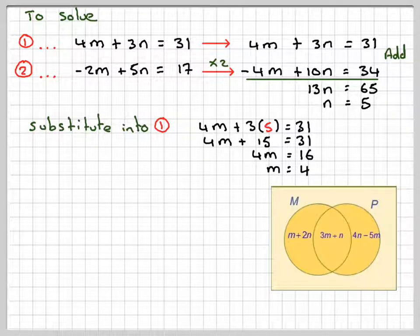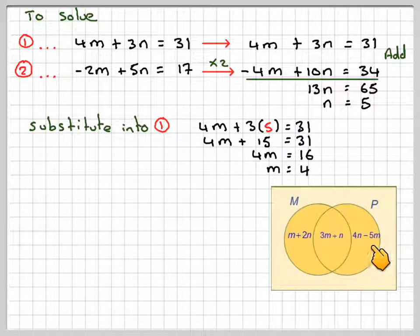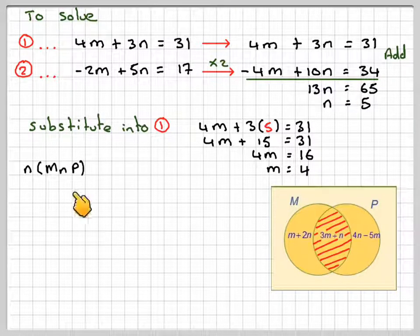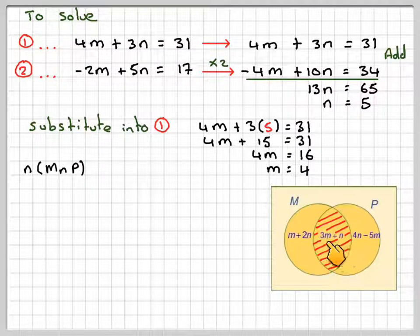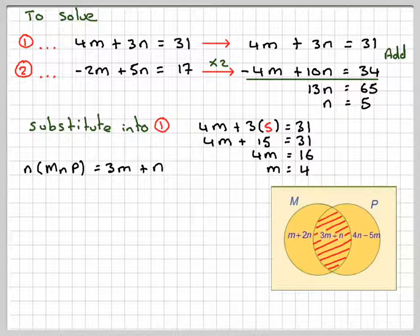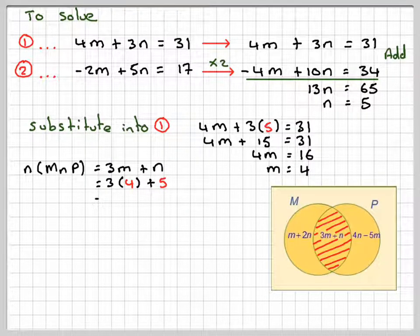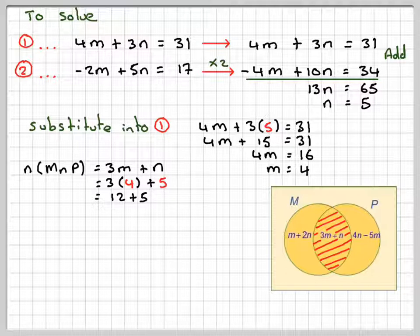Now, in the context of the question, M and N would have to be integers, because these are the numbers in a set. So the number in M intersection P is the shaded area here. So it's 3M plus N. So that's going to be 3 times 4, my value that I calculated, plus 5. That's 12 plus 5, which makes 17.